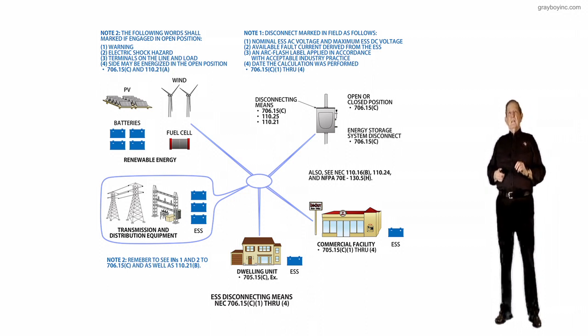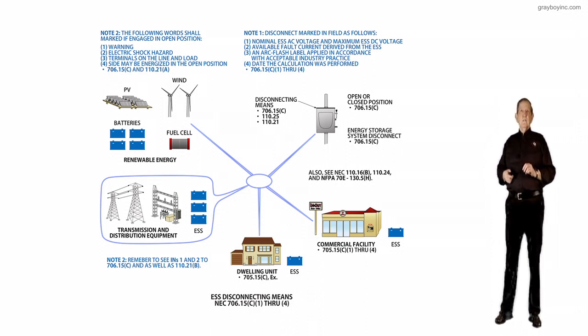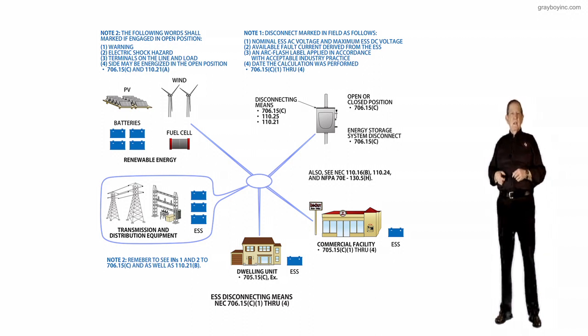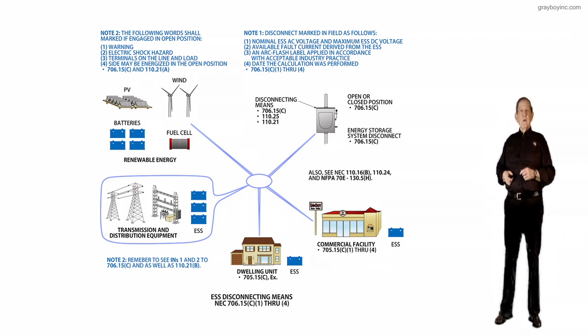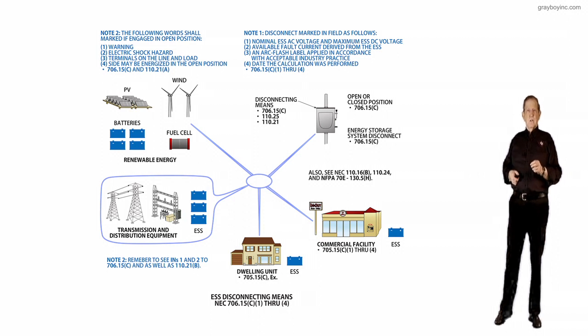Now, the call-outs, we kind of looked at those. We'd have PV, wind generators, wind electrical systems, batteries with a charger, a generator set that could be Article 700, 701, or 702.